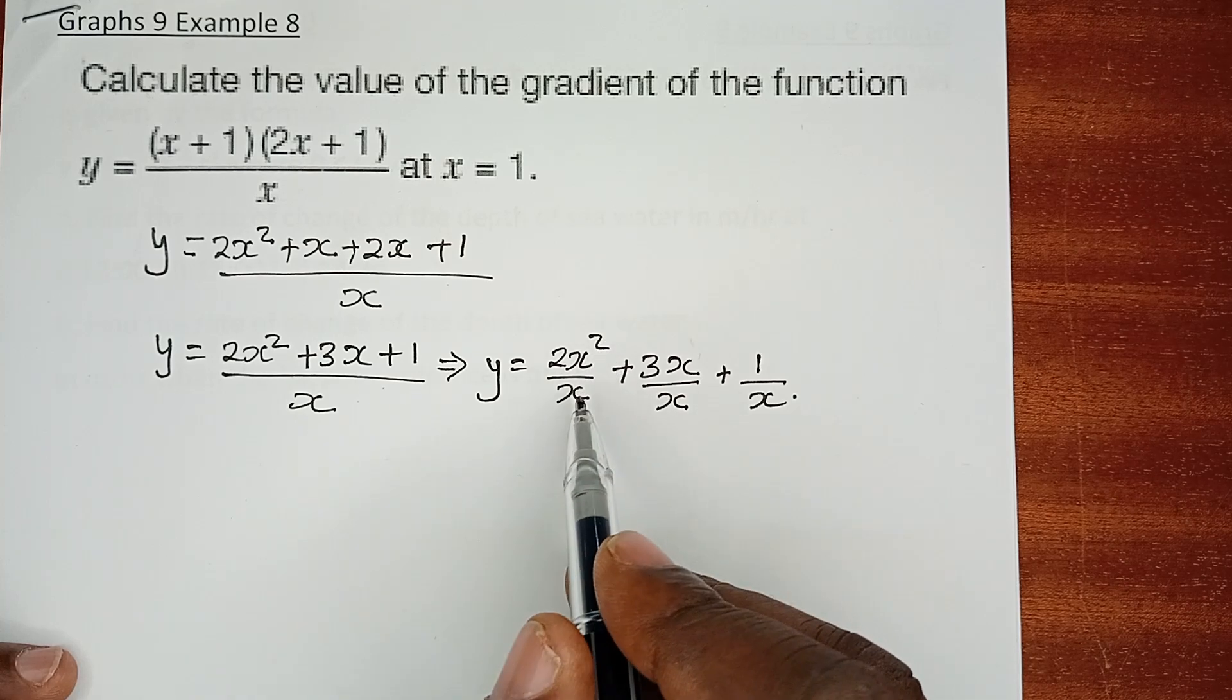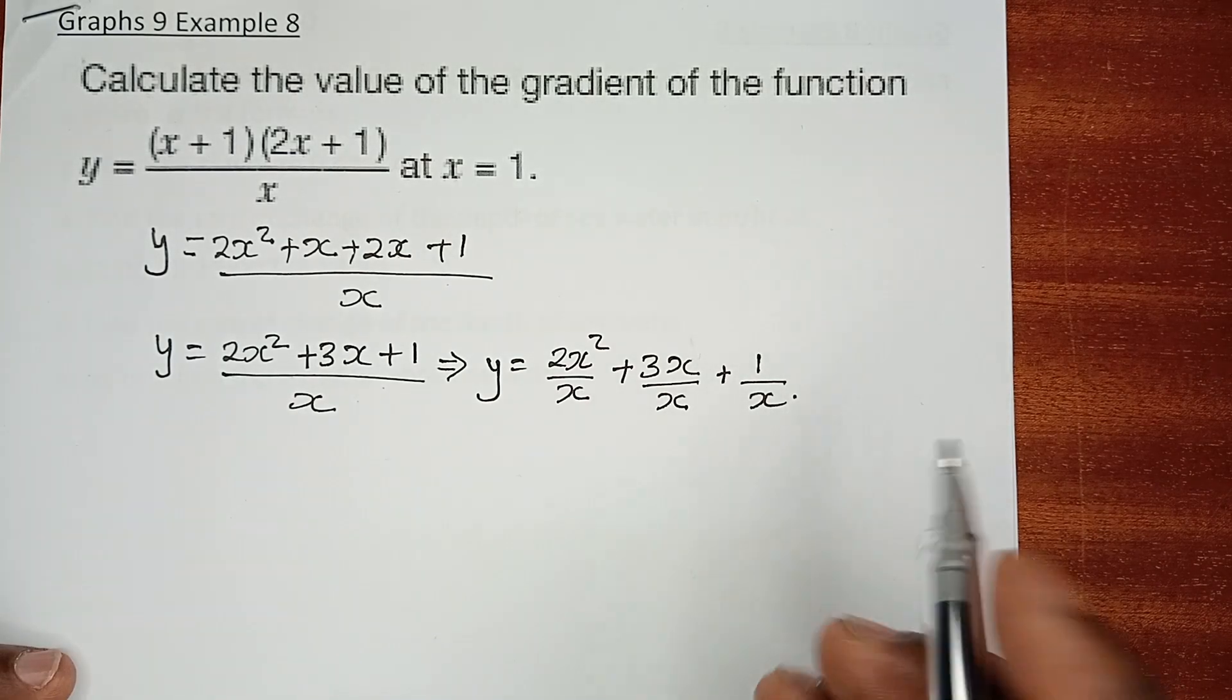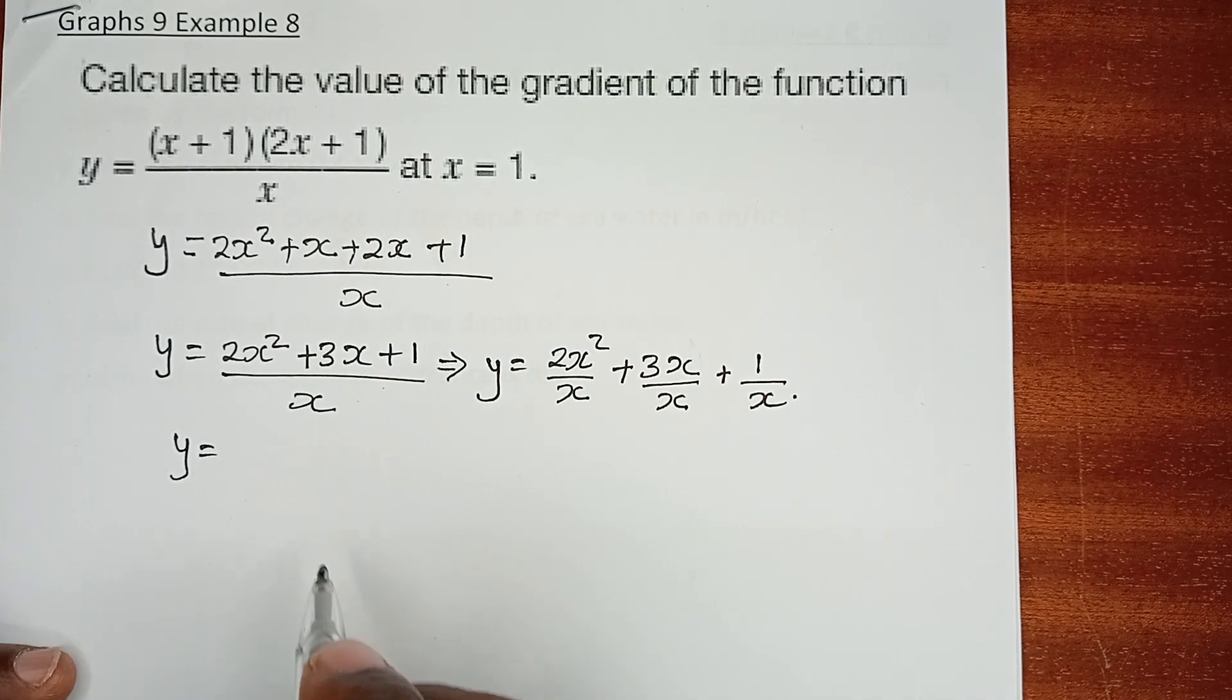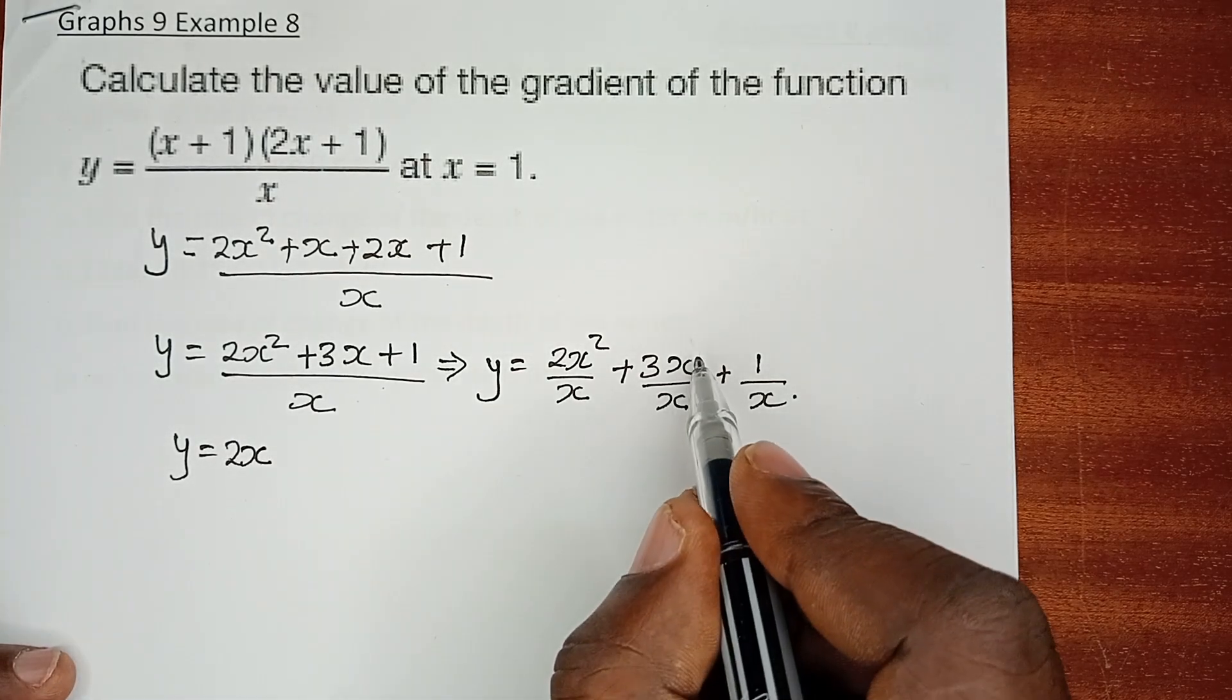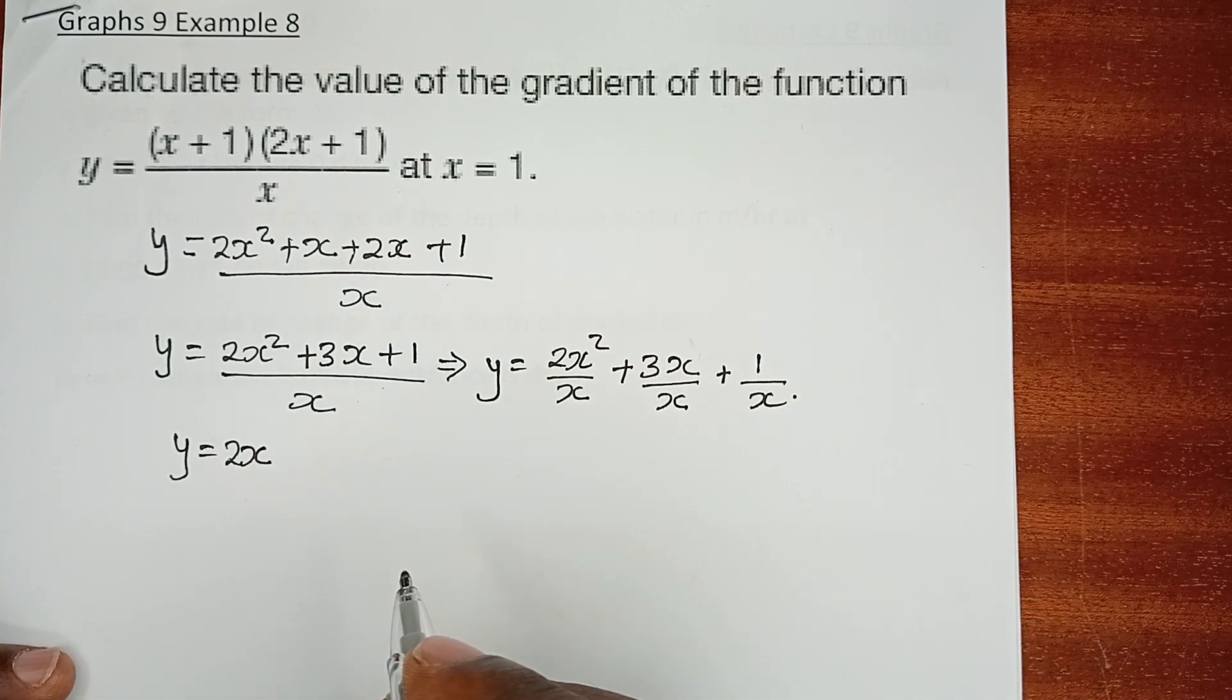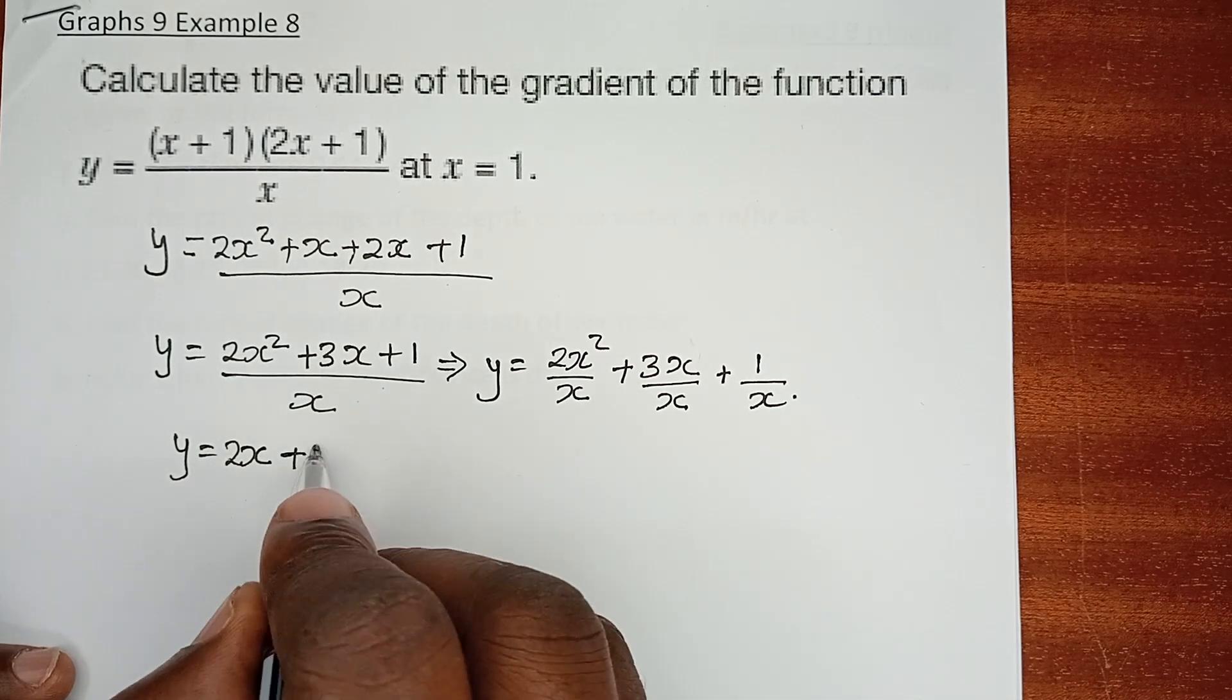By the use of laws of indices, this is x power 2 over x power 1, and because this is division we can use the subtraction rule. That means we have y equals 2x to the power 1, which is 2x. For the second term, 3x over x, 1 minus 1 is 0, and x raised to power 0 is 1, so we have 3.